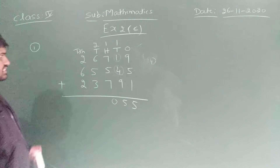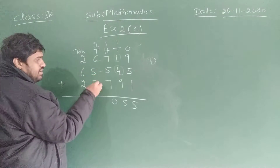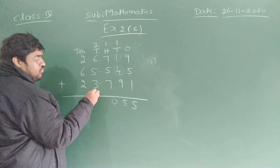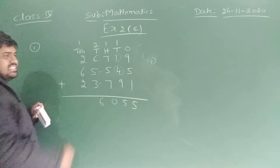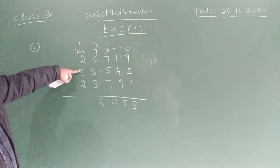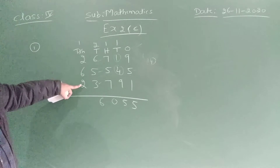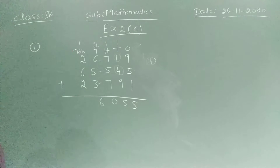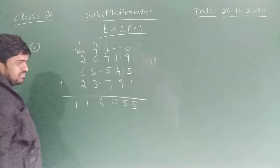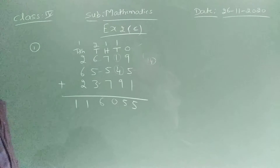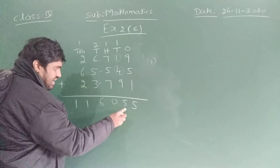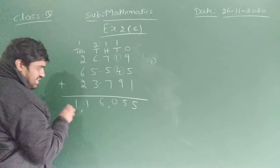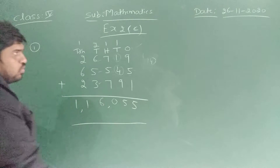Next: six plus five is eleven. Eleven plus three is fourteen. Fourteen plus two is sixteen. Write six, carry one. Next term: two plus six is eight. Eight plus two is ten. Ten plus one is eleven. That is our total number of fruits. The answer is one lakh sixteen thousand fifty-five — that is our total answer.